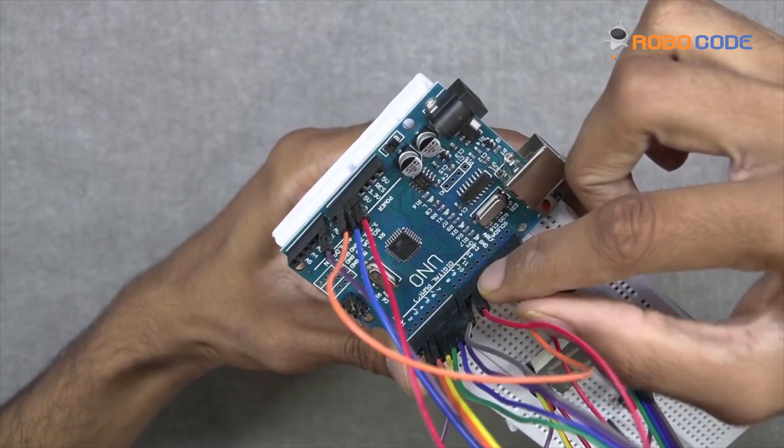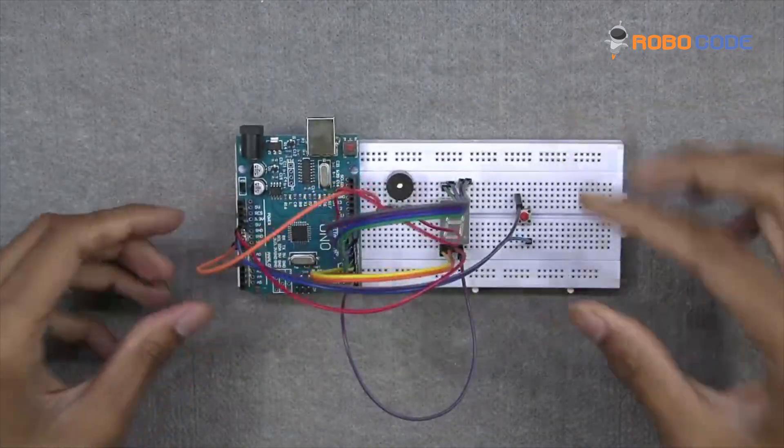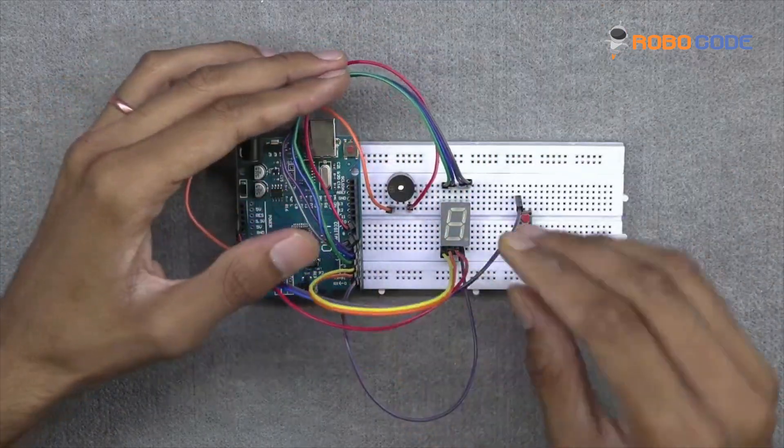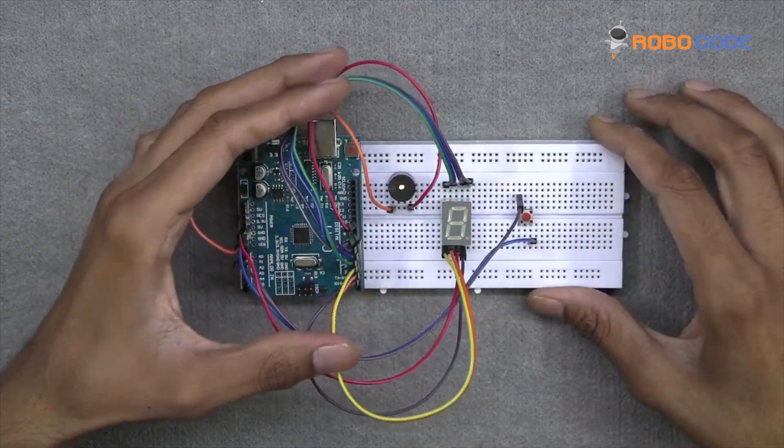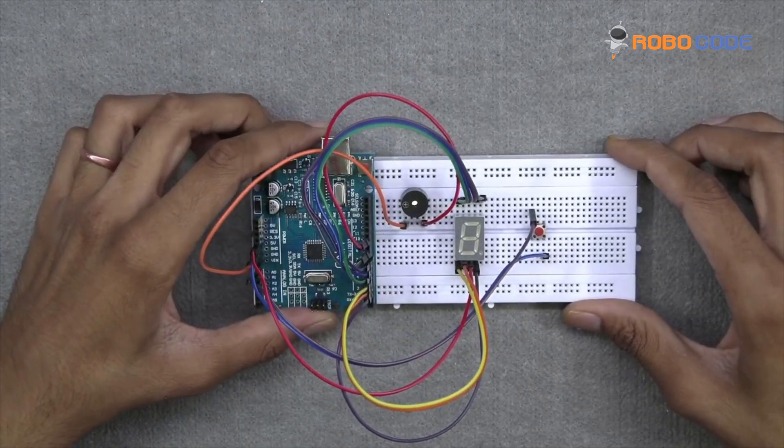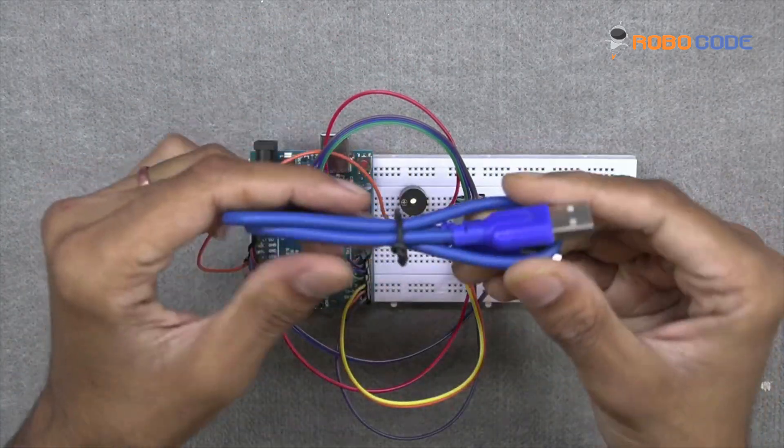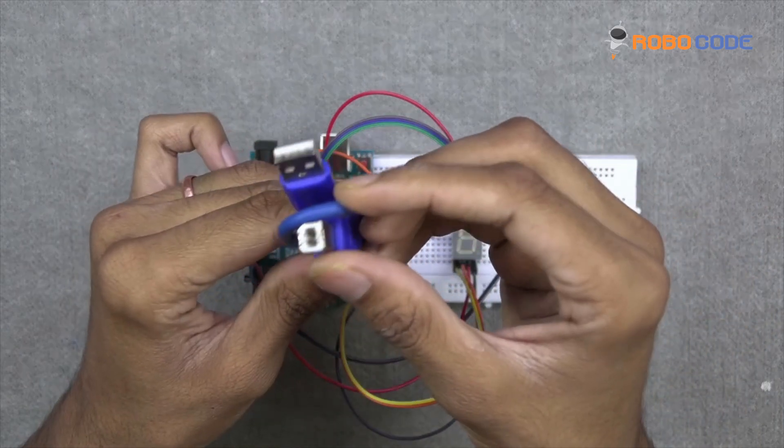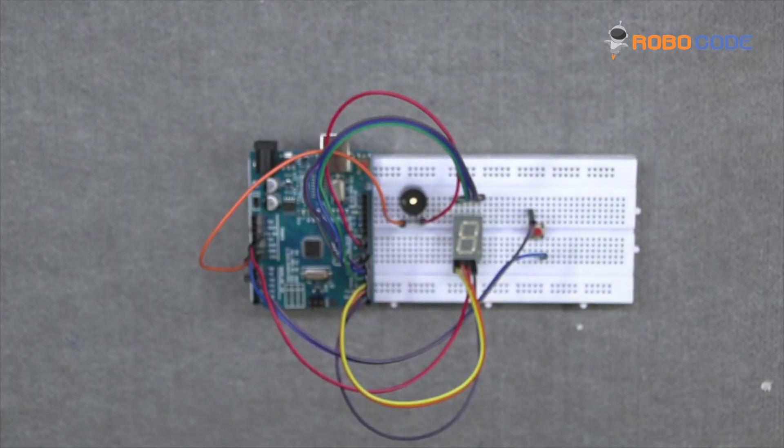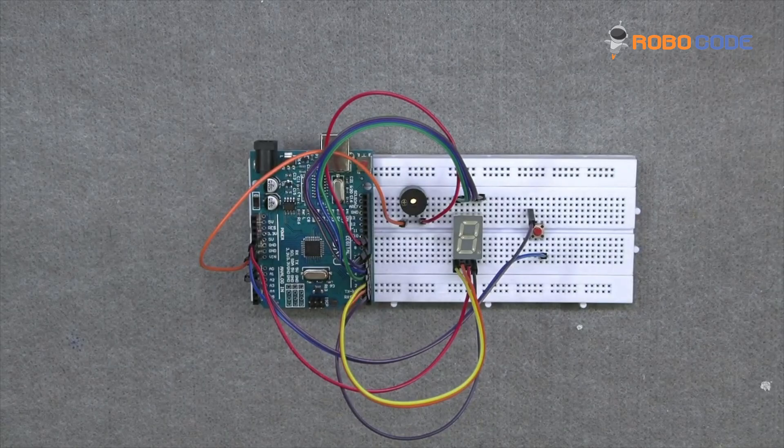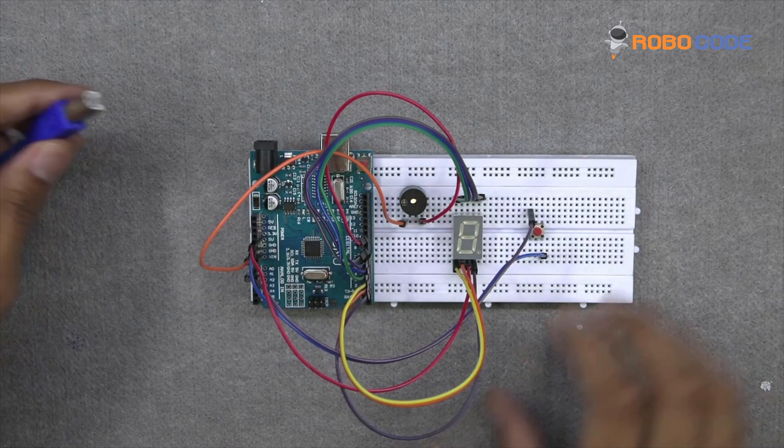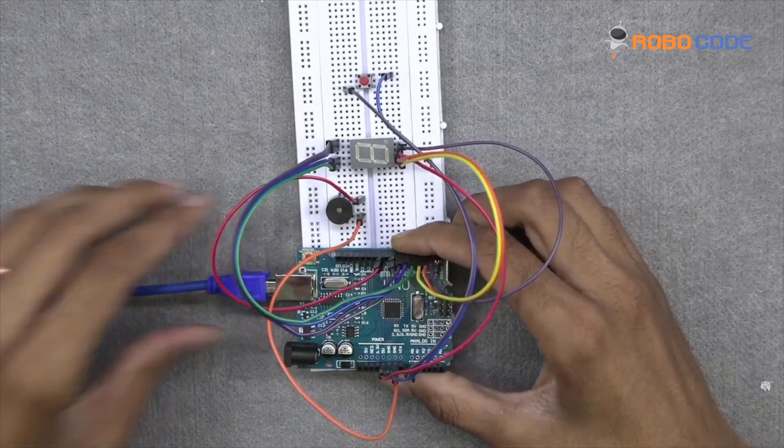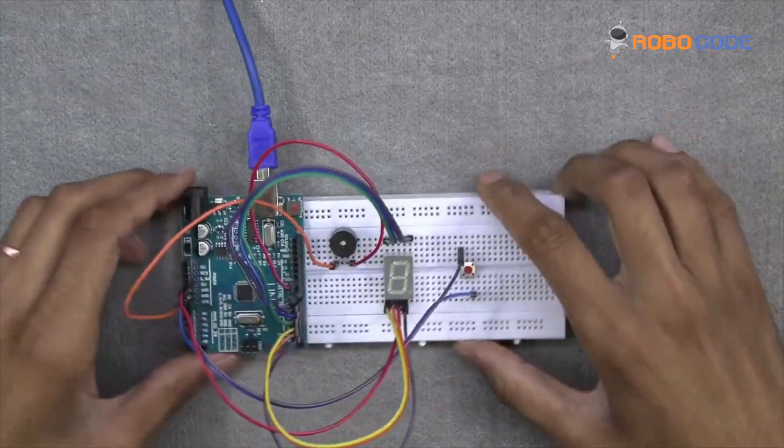So this is how we will make the circuit. Now we will take the USB cable, insert one side to the Arduino UNO board and the other side to the laptop in order to upload the code. Let's move to the next section where we will show you how to upload the code.